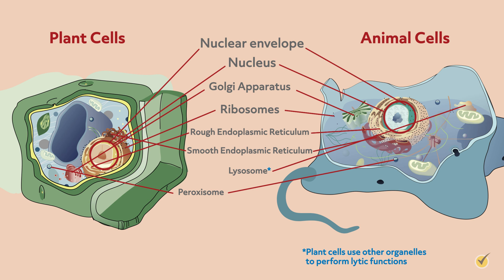The last common organelle between plants and animals is mitochondria. Mitochondria are responsible for energy metabolism by generating ATP. We'll talk about that a little bit later.